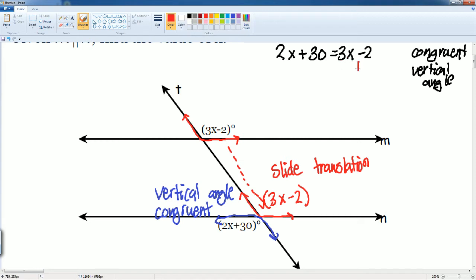So I'm gonna add 2 to both sides. I get 2x plus 32 is gonna be equal to 3x. I'm gonna subtract 2x to both sides. Bring down the 32 equal 3x minus 2x, just gets us 1x. So we can say 32 is equal to x.